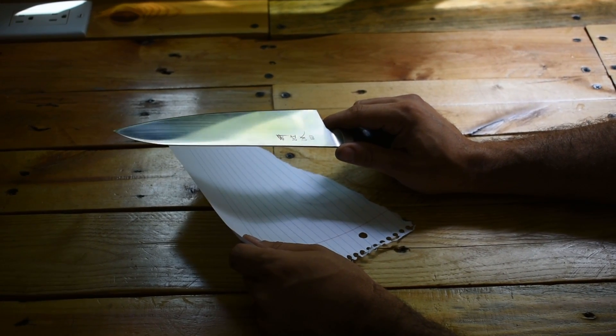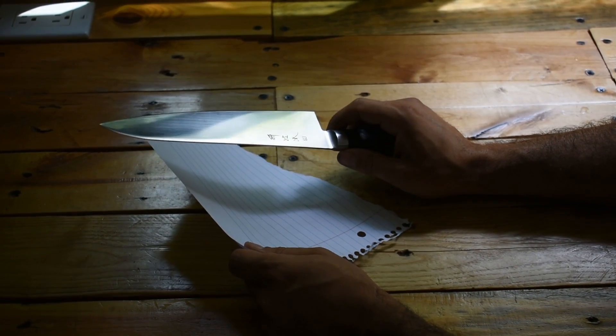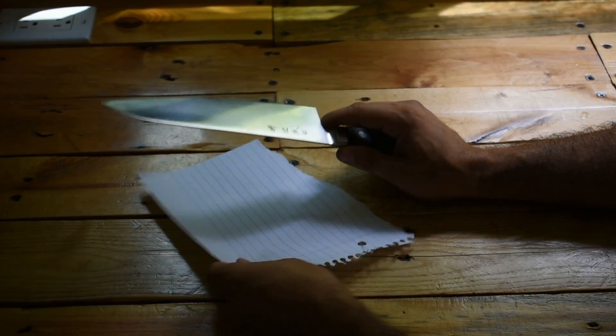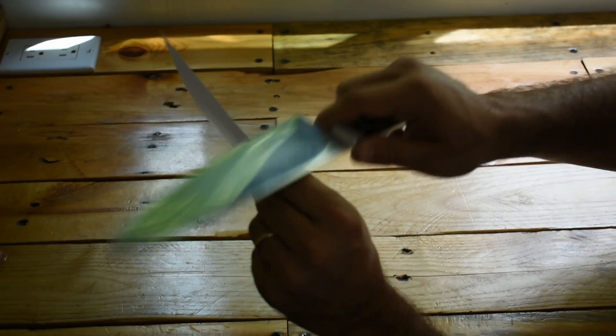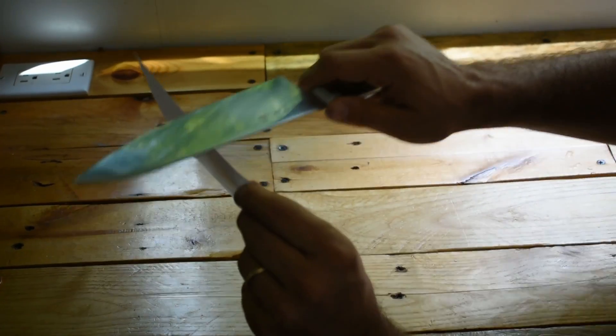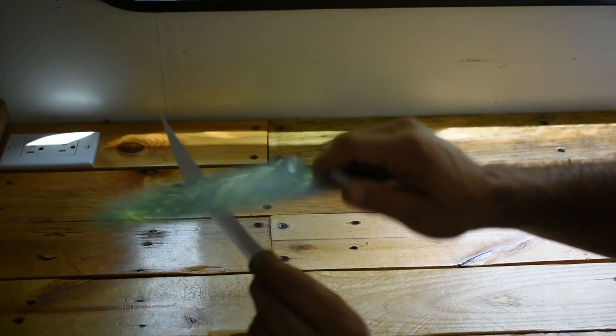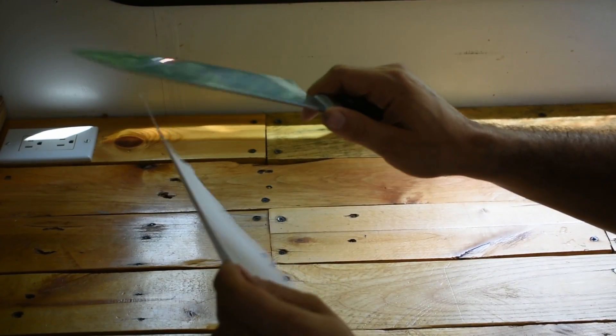Alright now we're gonna check to see how well we did and how sharp we got our knife and the easiest way to do that is with a scrap piece of paper. You hold it on edge and we are gonna slice it. If you get a nice smooth cut we're good. If it rips you're gonna have to start over again.